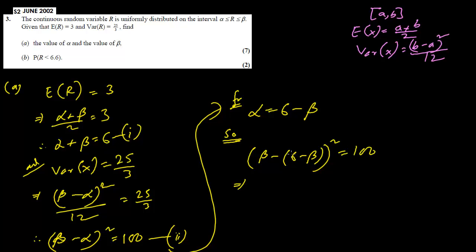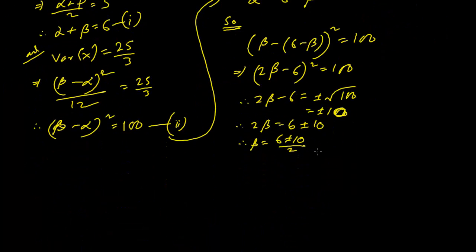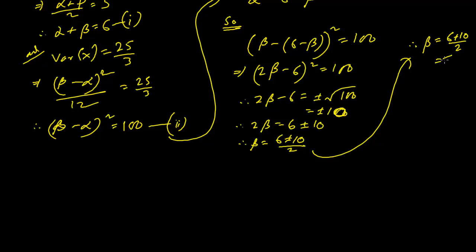Simplifying, (2 beta − 6)² = 100, so 2 beta − 6 = ±10. Therefore beta equals (6 ± 10) / 2. Taking the positive case: (6 + 10)/2 = 16/2 = 8.